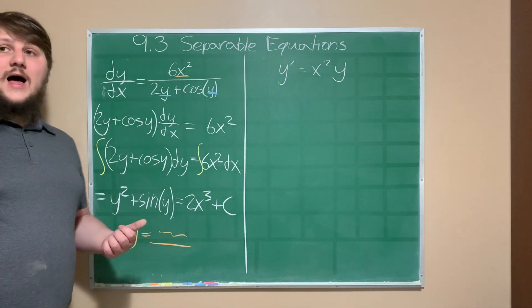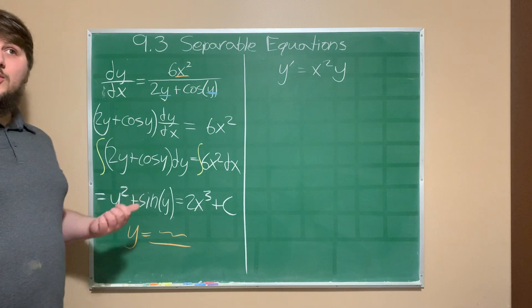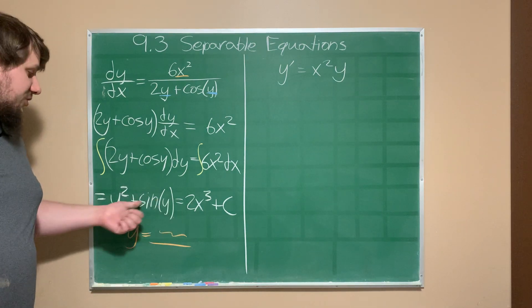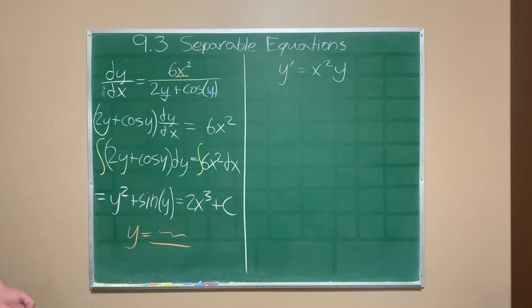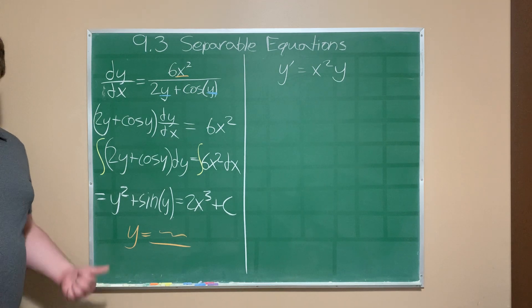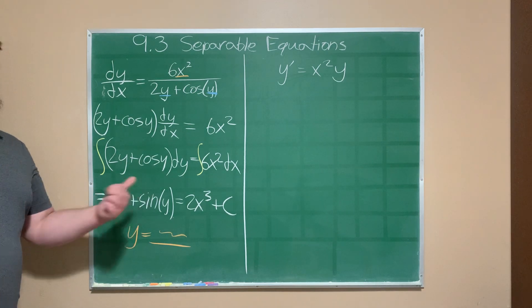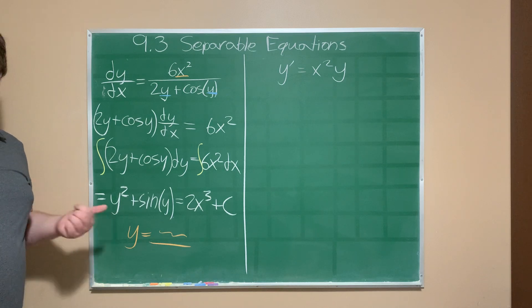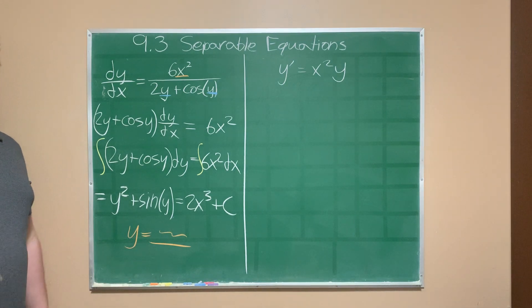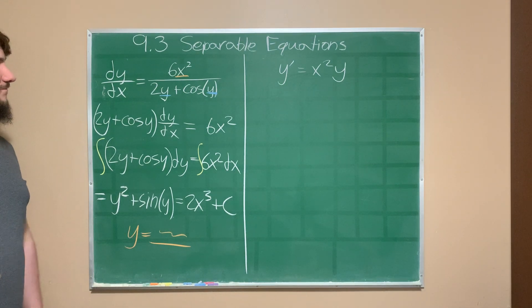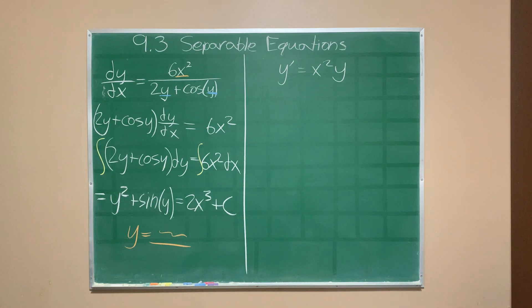What we have instead is called an implicit solution. There are still x and y values that make this equation true, and you can plot them — pick x values and find y values that satisfy the equation. It's just not as straightforward as one variable being a function of the other. On to the second differential equation.